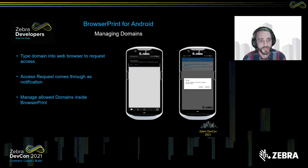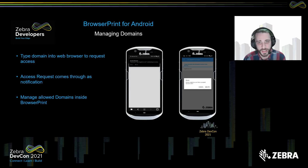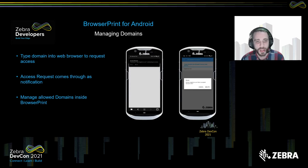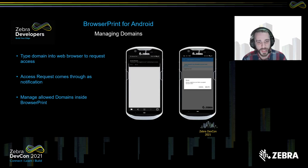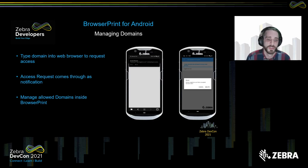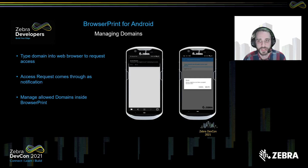Managing the domains for Browser Print is very similar to the web page. A popup will drop down from the top of the screen, giving you the ability to either allow or block the domain. Clicking block will block it for that one request, though refreshing the page will allow the popup to occur again. Clicking allow will add it to your accepted domains inside Browser Print. You can also long-press a domain in the list to bring up a popup allowing you to delete that domain from the list.